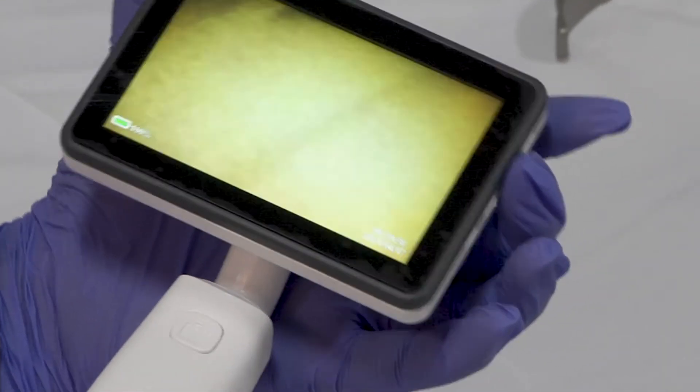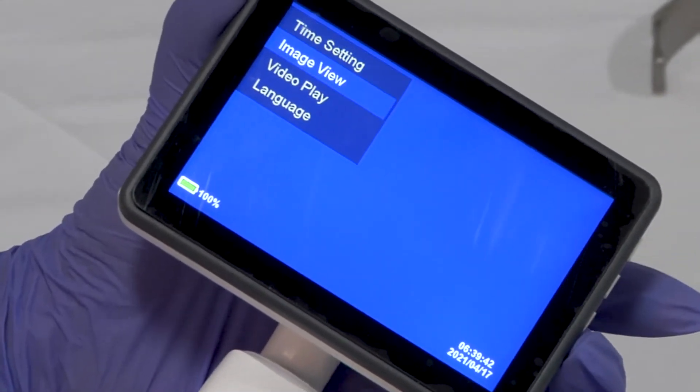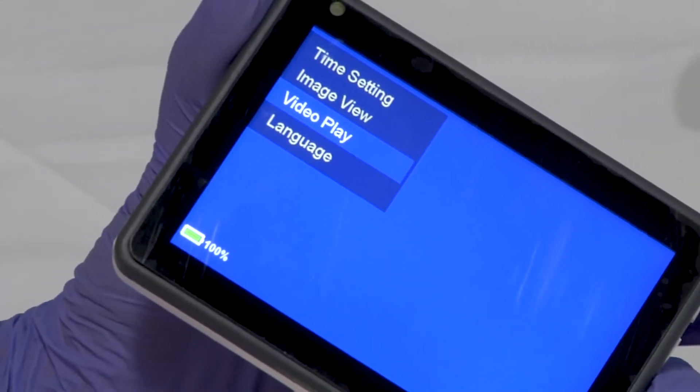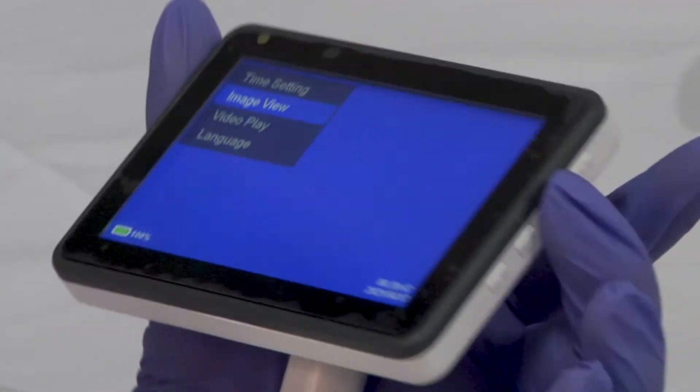Press the M button to enter the menu using the up and down buttons to select. Then press the M button again to enter the selected option.